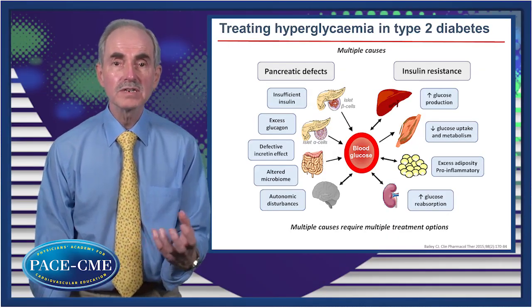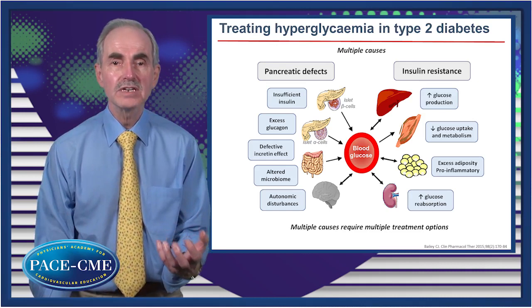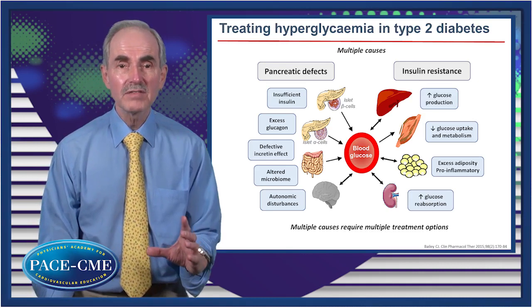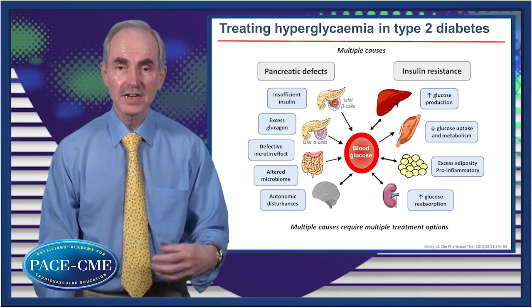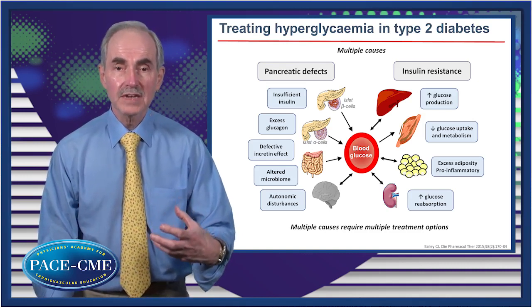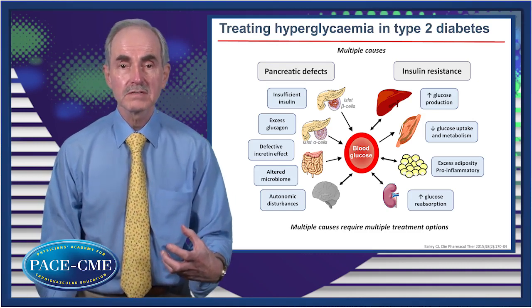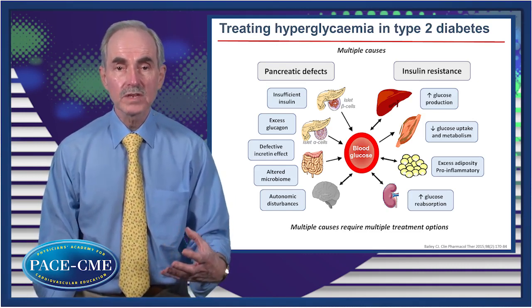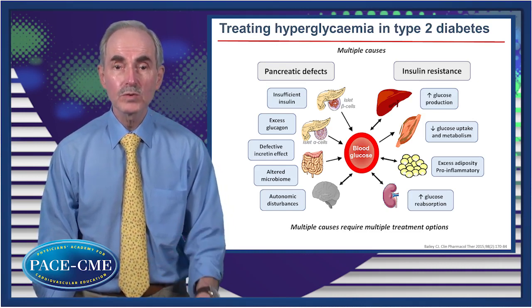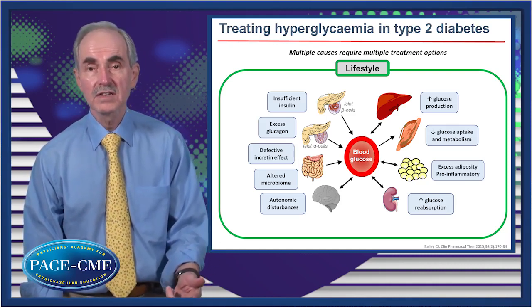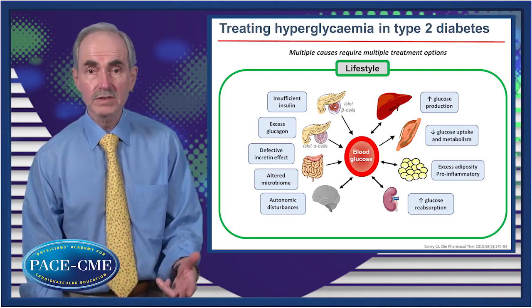On the other side of the equation, there's inadequate insulin production and usually an excess of glucagon produced. There are various defects associated with the incretin effect — that's how hormones from the intestine bolster the effect of the pancreas during meal consumption. There's also an altered microbiome and various autonomic changes in the control of glucoregulation. Our first-line approach to managing hyperglycemia is lifestyle: diet, exercise, health education, and weight control.